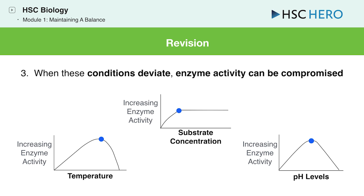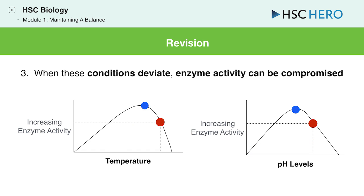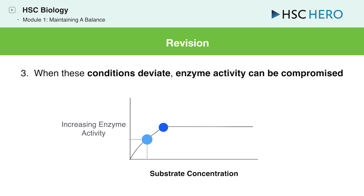3. When these conditions deviate, enzyme activity is compromised. A. If the temperature or pH level increases beyond or decreases below the optimal enzyme activity point, enzyme activity will decrease. B. For substrate concentration, once the saturation point is reached, enzyme activity won't increase any further regardless if you increased the substrate concentration. Anything less than the saturation point, enzyme activity will be lower than the optimal point.